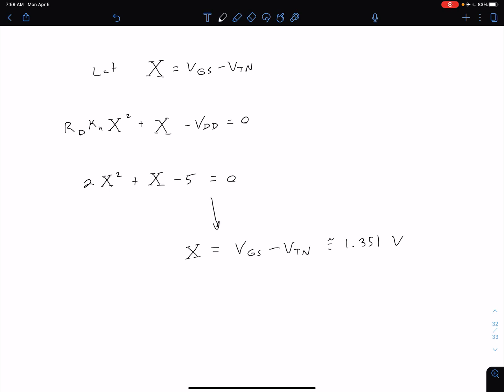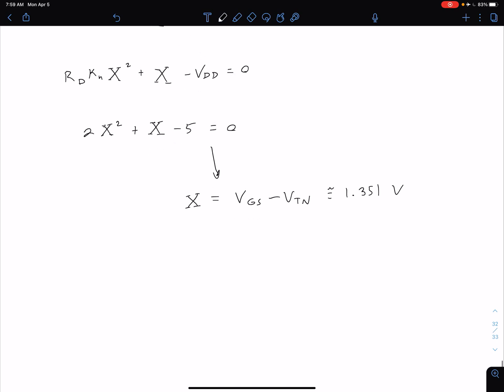We can then solve for our VDS sat and our VGS. That value is equal to our VDS sat, so VDS sat is equal to approximately 1.351 volts. To get our VGS value, we just add one volt to that, our VTN. So VGS is going to be approximately 2.351 volts.